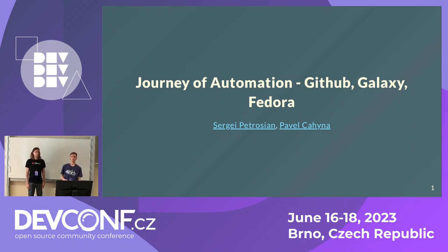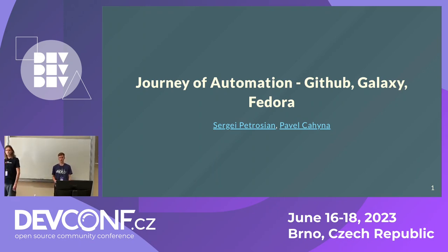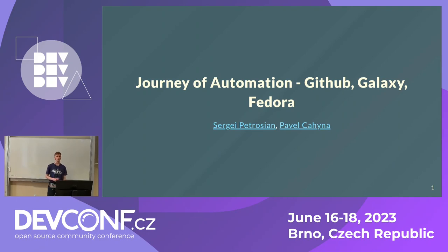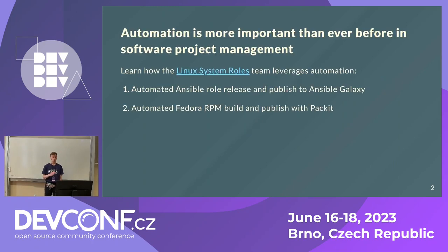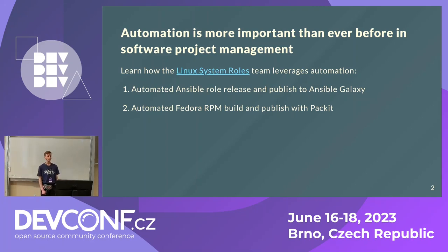It is critical to automate low-level, labor-intensive, repetitive tasks in the modern world. We're lucky to have many tools that allow for this automation, such as GitHub Actions, Packit, and so on. Today we will cover two main topics: the automatic release of GitHub repository content to Ansible Galaxy, and how we release the content as a Fedora RPM using Packit.